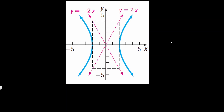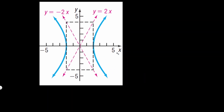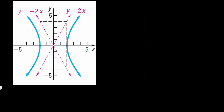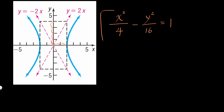Let's do another example — you may pause and come up with the equation of this hyperbola. The center is at (0, 0), and it opens left and right, so x is positive: x squared over something minus y squared over something equals 1. From the center we went right and left 2 to reach the vertex, so under x it's 2 squared equals 4. Looking at the box, we went up and down 4, so that squared is 16. The equation is x squared over 4 minus y squared over 16 equals 1.